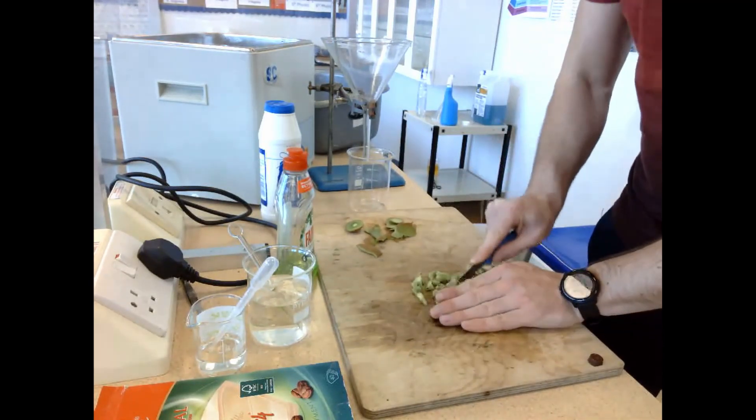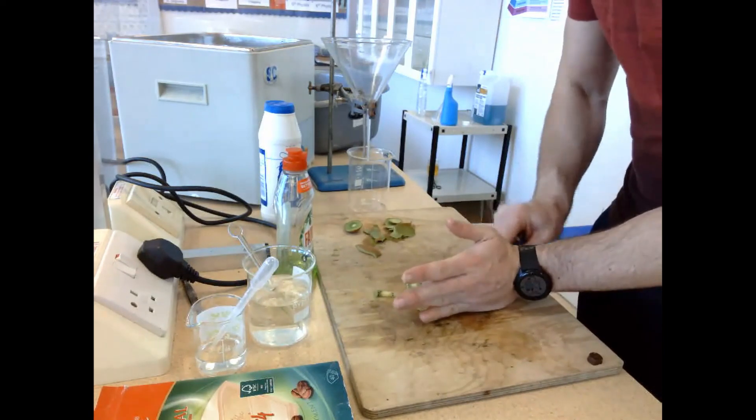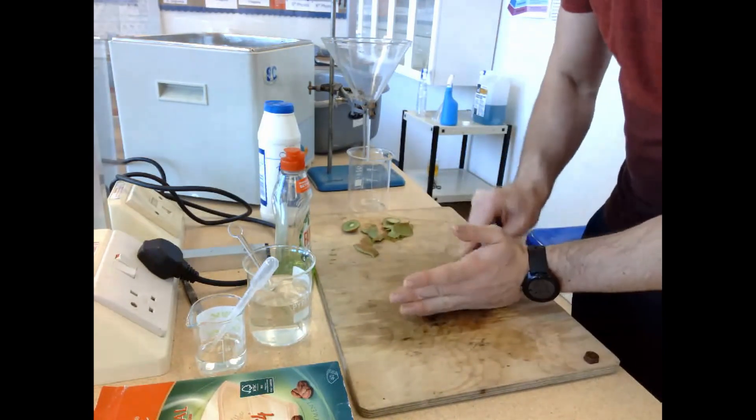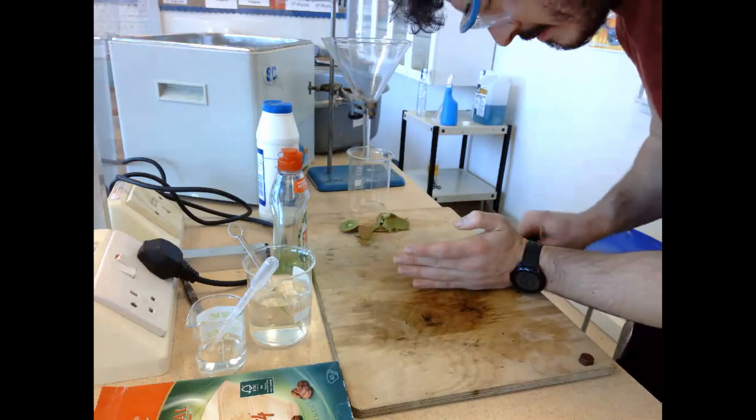So the first thing we do here is we peel the kiwi, and then we start to chop it up. The reason we're chopping it up is to release out the cell contents, because chopping it breaks down the cell walls.